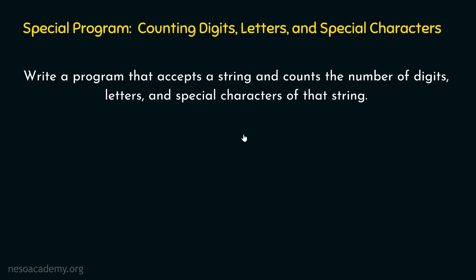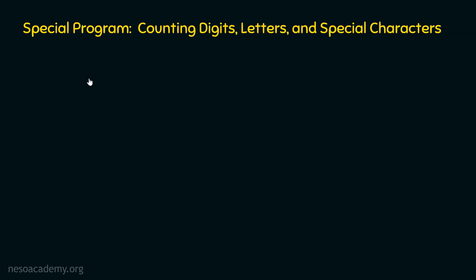As we know the problem statement, let's write the program. First, we will ask the user to enter a string and we can do that with the help of the input method. This time, we don't need the int method and we don't need any type casting, because we want to receive a string from the user and manipulate it accordingly. We will receive the string in a variable called S.